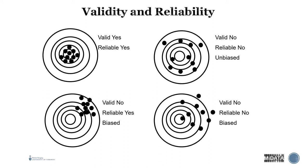Let's look at a visual of validity and reliability. In the top left quadrant: validity yes, reliability yes — it's hitting the bullseye and all targets are clumped together. Moving to the top right: validity no, reliability no — data points are scattered randomly, considered unbiased because the scatter is due to random error.